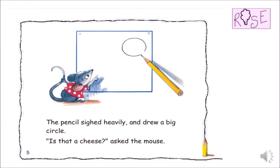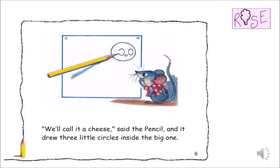The pencil sighed heavily and drew a big circle. Is that a cheese? Asked the mouse. We will call it a cheese, said the pencil. And it drew three little circles inside the big one.